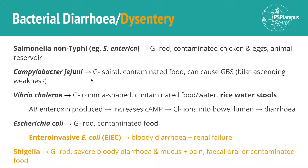Then we've got Campylobacter jejuni — from contaminated food, a gram-negative spiral — and it can cause Guillain-Barré syndrome, that autoimmune neurological disorder set off by infection. The characteristic presentation of Guillain-Barré syndrome is bilateral ascending muscle weakness.